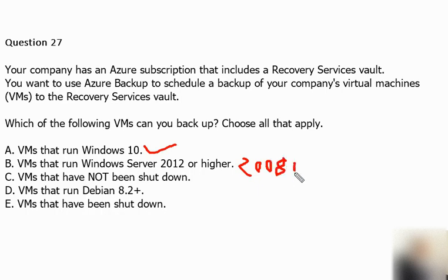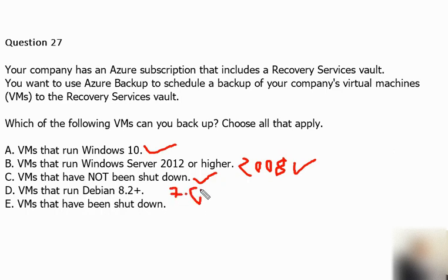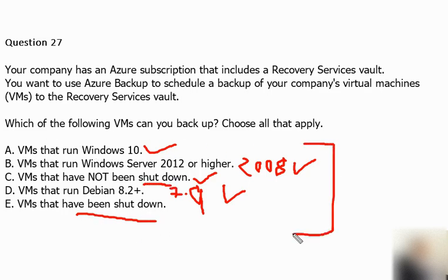Option C: virtual machines that have been shut down or not shut down. Azure Backup supports backup of VMs in both shutdown and non-shutdown conditions. Option D: virtual machines that run Debian 8.2 plus. Azure Backup supports 64-bit Debian from Debian 7.9 plus, so Debian 8.2 is covered. Shutdown and offline machines are also supported. So all options are correct — everything is covered.